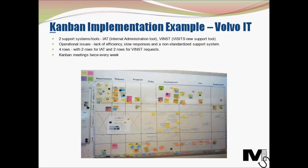A physical Kanban board was used to increase efficiency and remove bottlenecks. The board consisted of four rows — two for IAT and two for WINST requests — with columns aligned to service statuses in the IAT such as requirement, request, and proposal. Different team members attended Kanban meetings twice every week to ensure everyone understood how to use the board, prioritize tasks, and accomplish tasks. They also implemented a separate ready board to list all problems which were solved, keeping the team motivated. The implementation resulted in fewer bottlenecks and teams meeting their productivity goals.